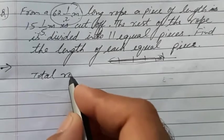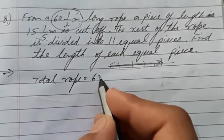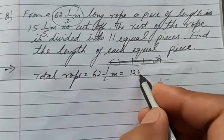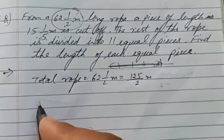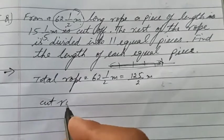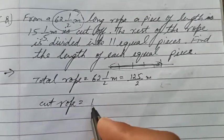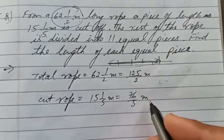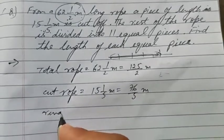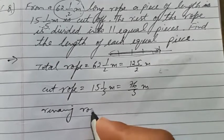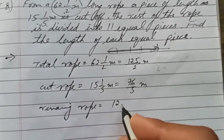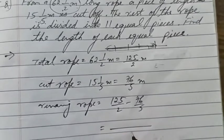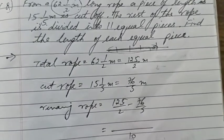Total rope is 62½ meters, that means 125/2 meters. Cut rope is 15⅕, that means 76/5 meters. Now remaining rope - this much minus this. Take LCM, which is 10. Five times, multiply this with 5, so 625.